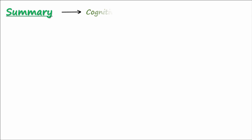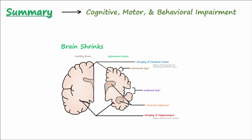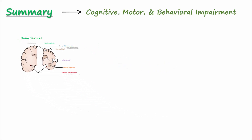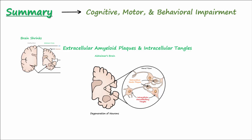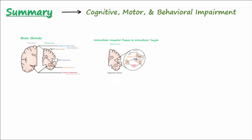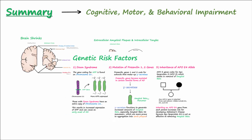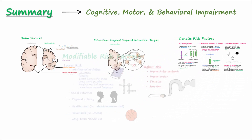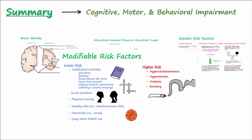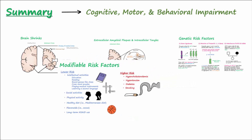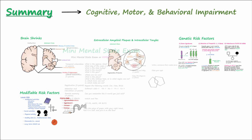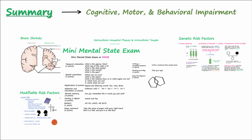In summary, Alzheimer's disease is the most common form of dementia and causes cognitive, motor, and behavioral impairment. The brain shrinks, and extracellular amyloid plaques and intracellular tangles damage neurons. Genetic risk factors include Down syndrome, mutations in presenilin 1 and 2 genes, and inheritance of the ApoE4 allele. Certain modifiable factors may be associated with decreased or increased risk for developing AD. A Mini Mental State Exam may be given to assist in the diagnosis.